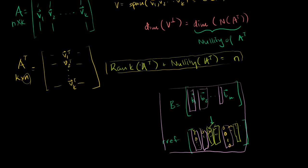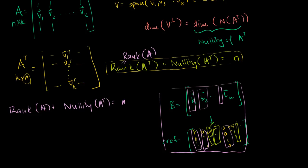In the last video, I showed that the rank of A transpose equals the rank of A — transposing a matrix doesn't change its rank. So we can rewrite the equation as: rank of A plus nullity of A transpose equals n. The rank of A is the dimension of the column space of A, and the nullity of A transpose is the dimension of the null space of A transpose.